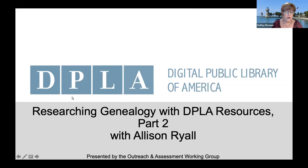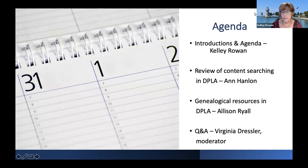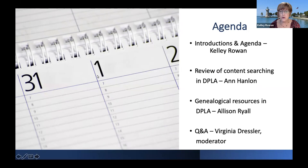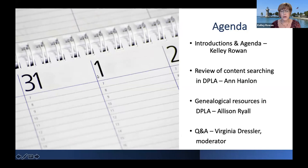Let's go to our agenda for today. In our first webinar, we spent a good deal of time with DPLA resources and how to search, so we're cutting that out this time to give Allison more time. We'll review the most popular questions related to searching, which Anne Hanlon — head of digital initiatives at University of Wisconsin in Milwaukee — will cover. Then we'll move on to Allison Ryle, and lastly Virginia Dressler, digital projects librarian at Kent State University, will be moderating chat. I'm Kelly Rowan, digital archives librarian at Florida International University and current chair of the DPLA outreach and assessment working group.